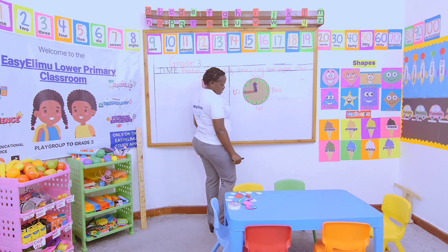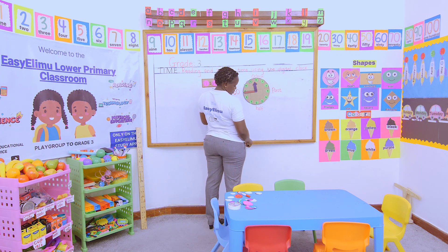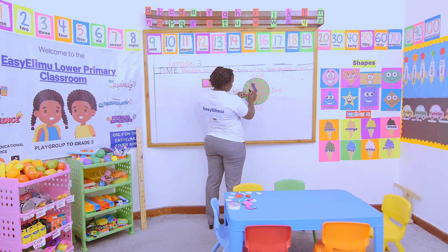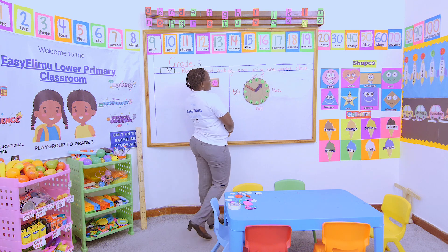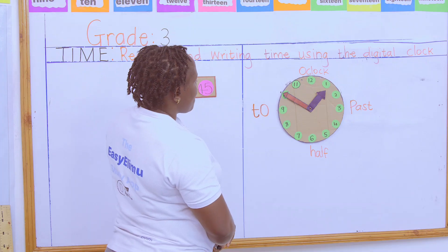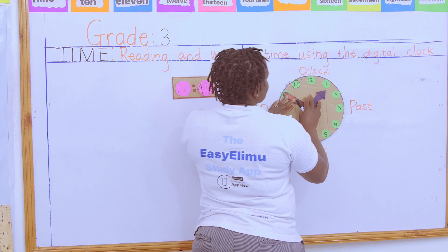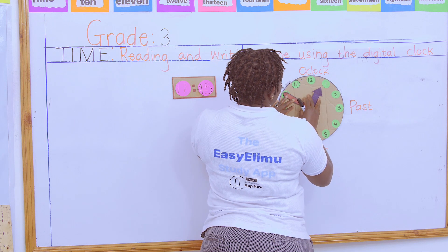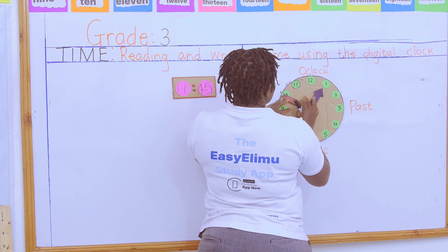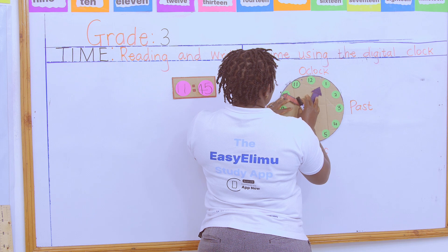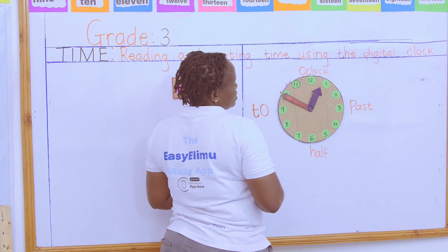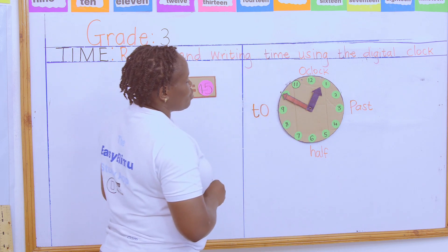Now, do you need to represent this? The long hand is on ten and the short hand is there, next to one. So what does it tell us? The long hand is on ten and the short hand is next to one.